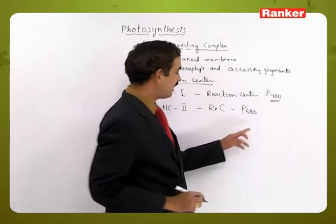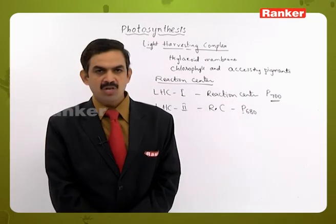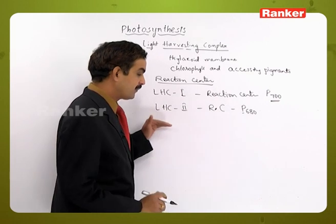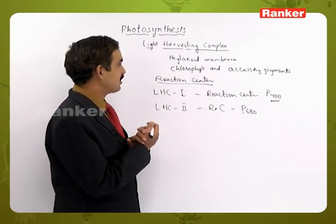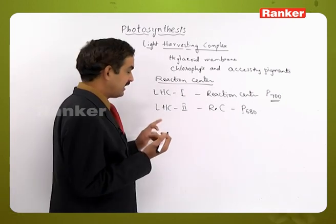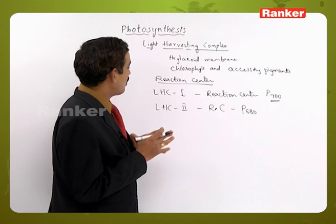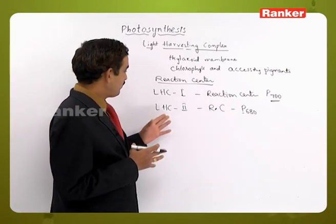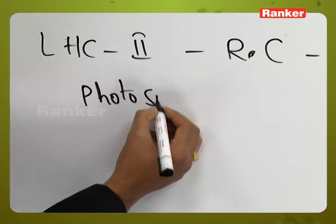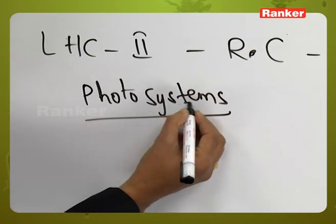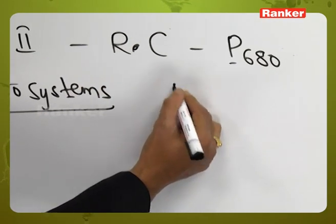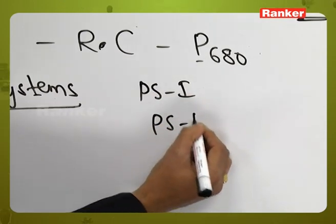P represents the pigment, and 680 represents the wavelength of light where maximum absorption is done by the chlorophyll molecules and accessory pigments present in that light harvesting complex. These are called photo centers, concerned with the absorption of light. These harvesting complexes and reaction centers are present in the thylakoid membranes and are considered as photosystems, discovered by scientist Emerson. According to him, there are two types: photosystem 1 and photosystem 2, also called PS1 and PS2.